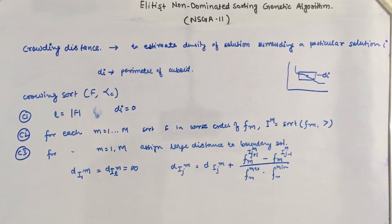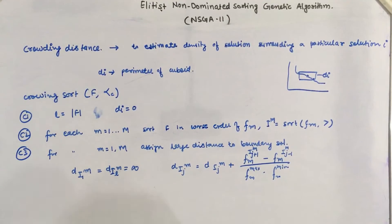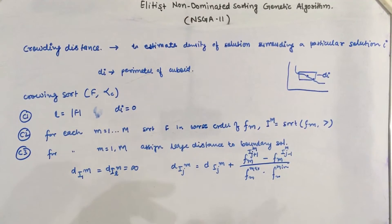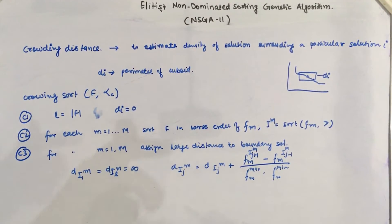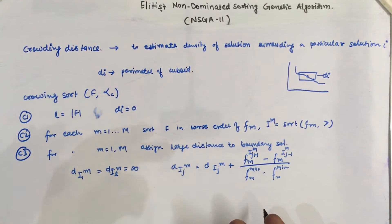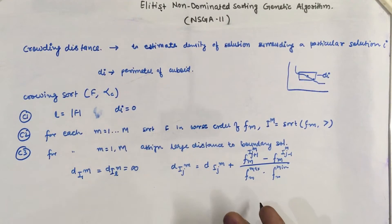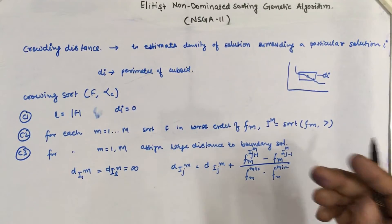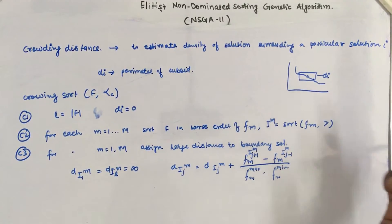Let's understand the concept of crowding distance. Crowding distance is generally used between solutions of the same front. Because we cannot decide the priority between solutions in the same front, we select those solutions which have higher crowding distance. We can also say that crowding distance measures the diversity or density of the solutions.